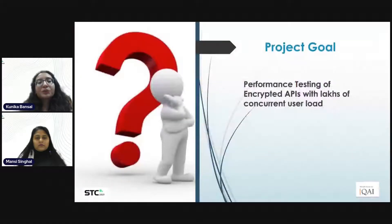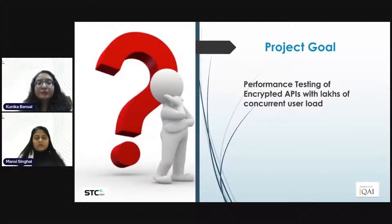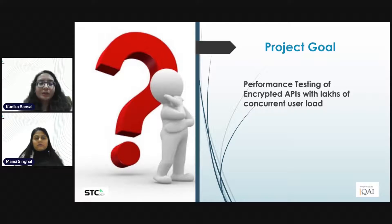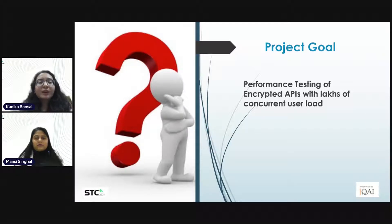Now, coming to the project we are going to cover today. We got a project which is a mobile-based application. This application has multiple GET and POST APIs to save user details, login to the application, upload data, and many other scenarios. All these APIs are encrypted with the AES algorithm. Each API has some parameters passed as the request body. There are a few APIs whose response also comes in encrypted form. The client provided the scenario, based on which we had to prepare the test strategy including test cases and test data, and execute the load test with lakhs of users using JMeter.